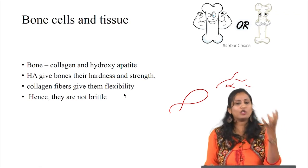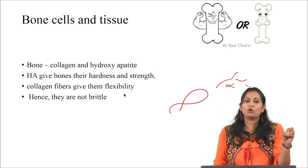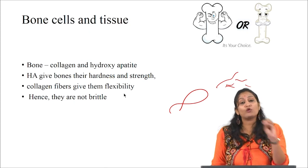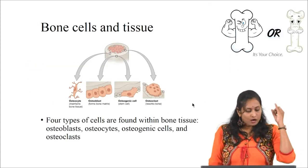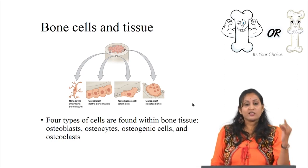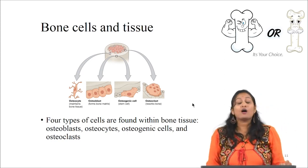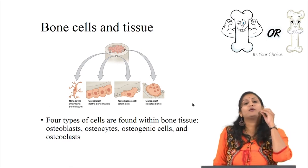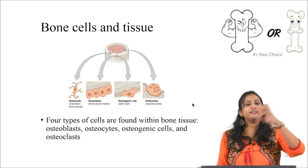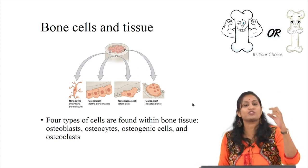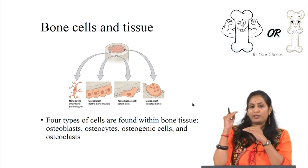Bone is composed of a smaller volume of cells. Although the bone is composed of a small volume of cells, they play a very important role in its function. There are four types of cells: osteocyte, osteoblast, osteogenic cell, and osteoclast. Osteoblast cells are the bone cells responsible for the formation of bone. They are present in growing structures, and the mature form is called osteocyte, which is the primary cell of mature bone.